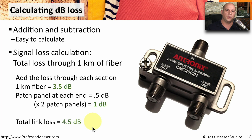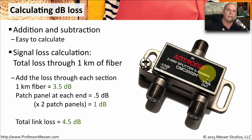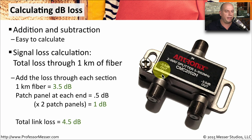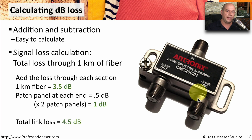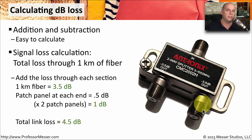You'll also see decibels referenced for copper connections. Here's a good example: a copper splitter used on a coax connection. This is a two-way splitter, which means it cuts the signal right in half. This particular splitter indicates that each output interface is going to lose about 3.5 dB of signal. We know that splitting a signal in half loses 3 dB, and the extra 0.5 dB accounts for the additional connector on the splitter — so it's a total of 3.5 dB signal loss on each side.